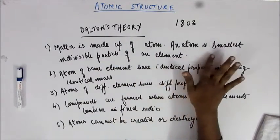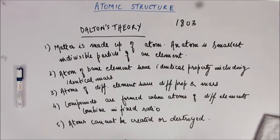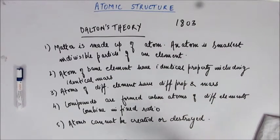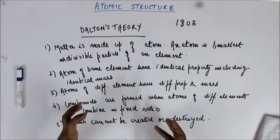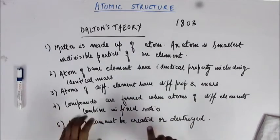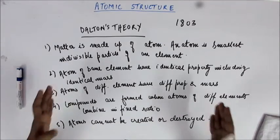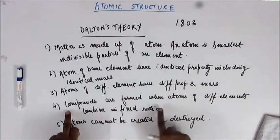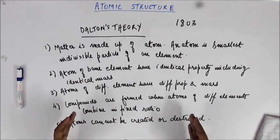Let's see why. 'Matter is made up of atom' — that's true. 'An atom is the smallest indivisible particle of an element' — that's false, because the atom is further made up of electrons, protons, and neutrons. So electrons, protons, and neutrons are the smallest indivisible particles as per our current knowledge, not the atom. This statement is wrong. 'Compounds are formed when atoms of different elements combine in a fixed ratio' — well, atoms of different elements do combine to form compounds, so the definition of 'atom' here is still the same atom we know today.